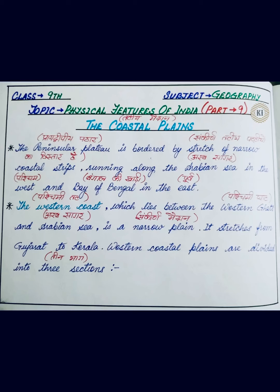First we study the western coast, yani Pashchimi Tat. The western coast lies between the Western Ghats and the Arabian Sea. The Western Ghats we studied when we studied the Peninsular Plateau. So between the Western Ghats — Pashchimi Ghat — and the Arabian Sea — Arab Sagar — that region is your western coast, Pashchimi Tat. And this is a narrow plain — ek sankeen maidan — not as wide and broad as the Northern Plains.